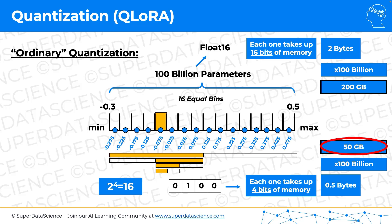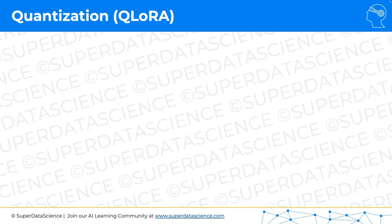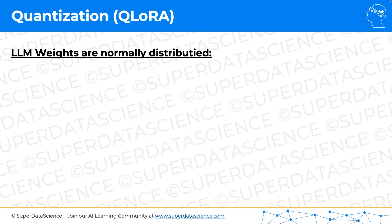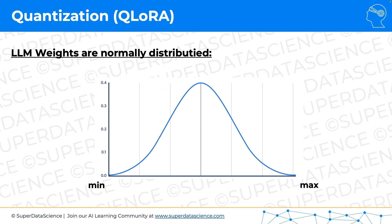In QLORA, we have to take one more thing into consideration: large language model weights are normally distributed. This is considered a well-known fact, and the paper does a thorough job proving this empirically. If we take equally distanced bins and apply them to a normal distribution, that wouldn't be ideal, because in the middle of the normal distribution a lot of parameters would fall into each bin, whereas on the tails very few parameters would fall into each bin. So we have to adjust our bins.